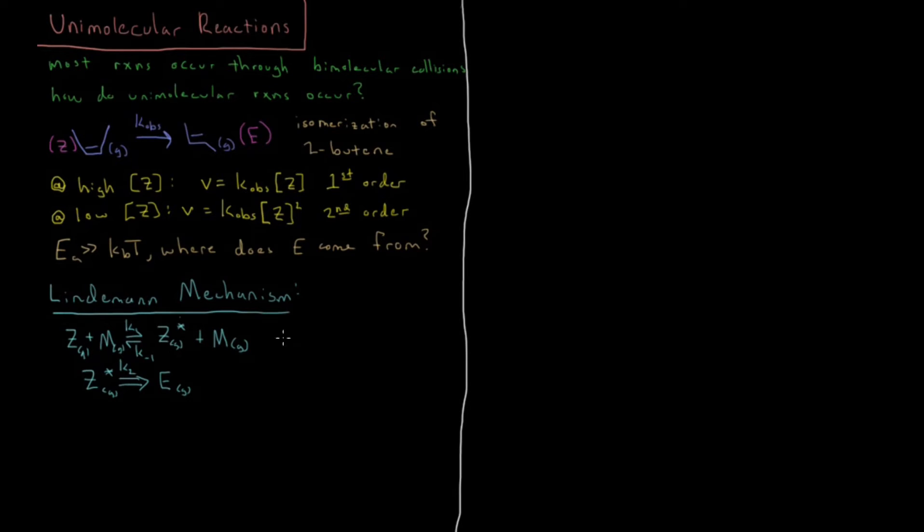Then there is another elementary step where we have our activated Z molecule going forward with some rate constant K2, forming E, and all of these are gas phase. M is the collision partner - it's just any gas molecule which collides with our Z molecule. It collides with enough energy to get it to a high energy state where if it is left alone long enough in that high energy state, then it can react to form its product which is the lower energy E isomer, the trans isomer.